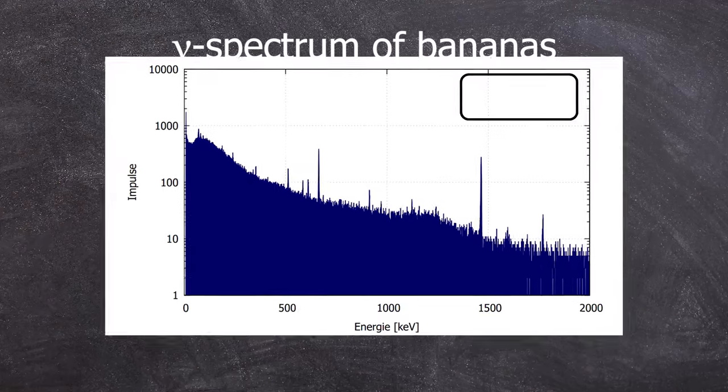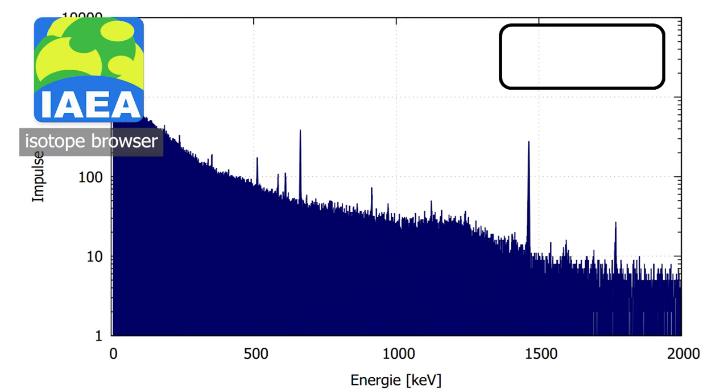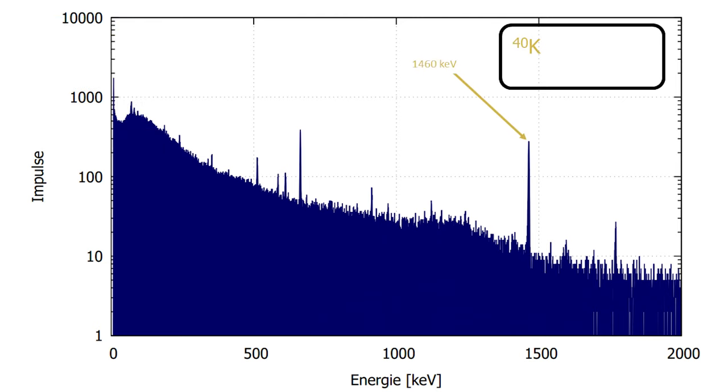You can clearly see two peaks. How do you interpret them? I would suggest that any nuclear chemistry enthusiast downloads the app called Isotope Browser. There you can see that potassium-40 has a gamma line at 1460 kiloelectron volts, which corresponds to the right peak.